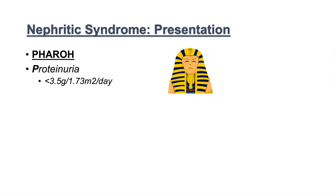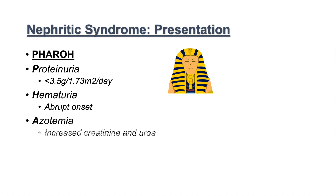In nephrotic syndrome, proteinuria would be more than 3.5 grams. H is for hematuria, which has an abrupt onset. A is for azotemia, which is essentially an increased creatinine and urea. R is for red blood cell casts. O is for oliguria. And the final H is for hypertension.